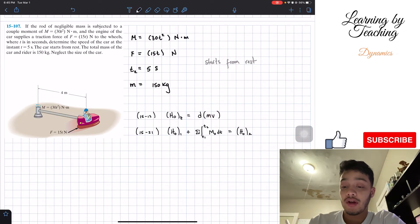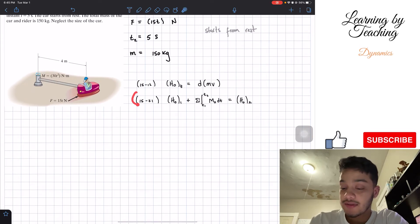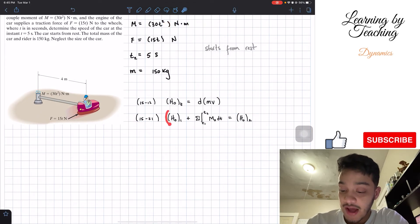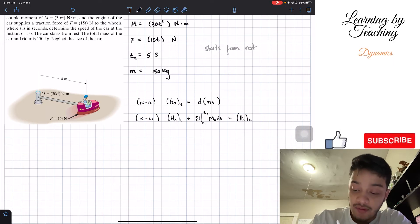We're going to take this big equation and start solving it. So the first thing I have is the angular momentum at the beginning and that happens when t is equal to zero. Well, what happens is that we start from rest and if we look, our equation has velocity, meaning that the velocity when we start from rest is equal to zero. So our first angular momentum is equal to zero.